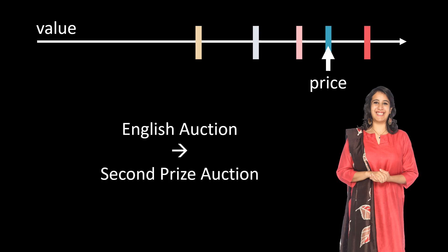In a second price auction, every player simply announces their secret value. Once the bids are in, we award the good to the highest bidder. But here is the twist: the winning player only has to pay the second highest bid. In other words, the outcome is exactly the same as in the English auction, but the process is much simpler.